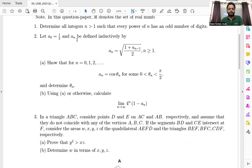Now we have to show that for n equals 0, 1, 2 and so on, A_n is nothing but equals to cos theta_n for some theta_n between 0 to pi by 2. And also we have to determine theta_n and part b is using A or otherwise we have to calculate limit n tends to infinity, 4 to the power n, 1 minus a_n. So let's get started.